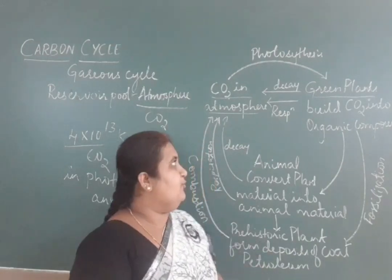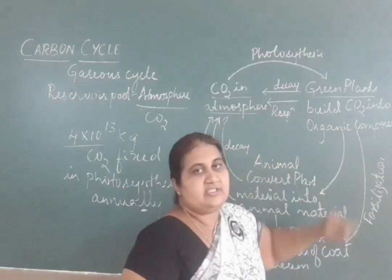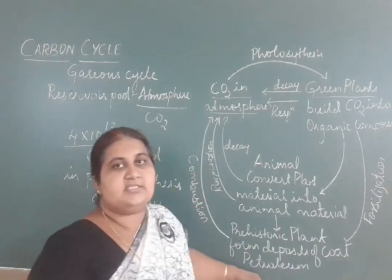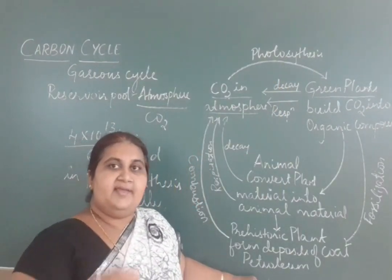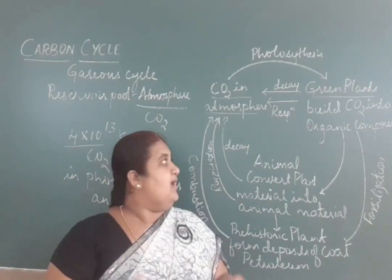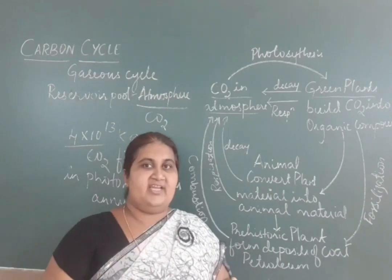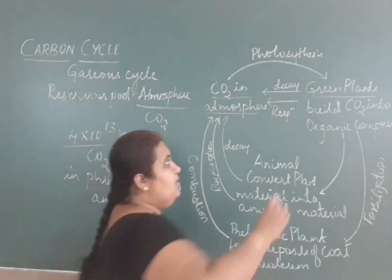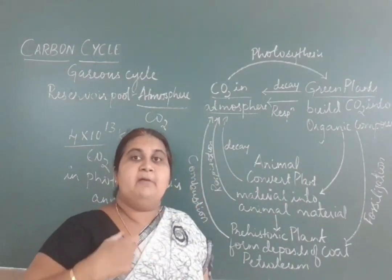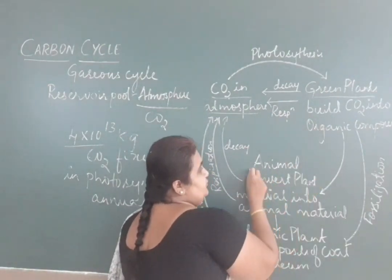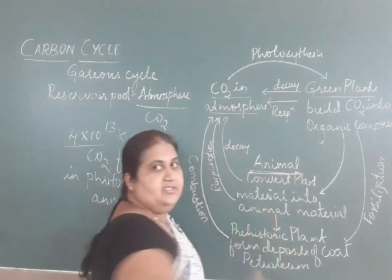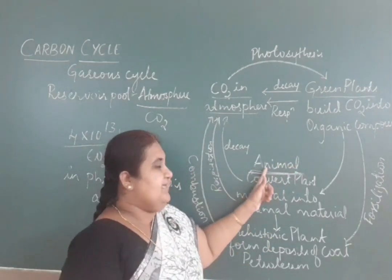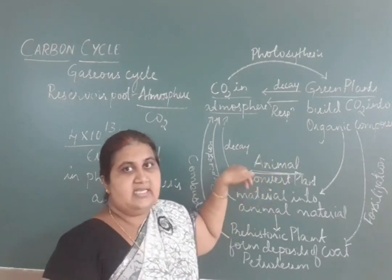Green plants build carbon dioxide into organic compounds by the process of photosynthesis, storing it in the form of plant biomass. When plants undergo photosynthesis and prepare food, a food chain occurs. Plants are eaten by herbivores, so the carbon present in green plants in the form of plant biomass travels into the animals.